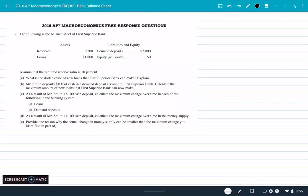Let's dive in. Number two, the following is the bank balance sheet of First Superior Bank. They have two thousand in demand deposits, a net worth of zero dollars - it's a really small bank and not terribly valuable. They have reserves of 200 and loans of 1800.